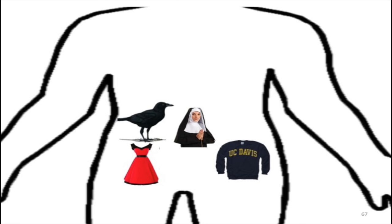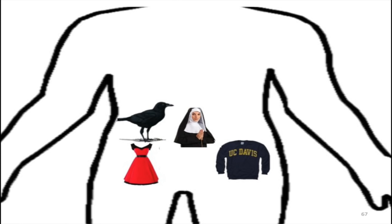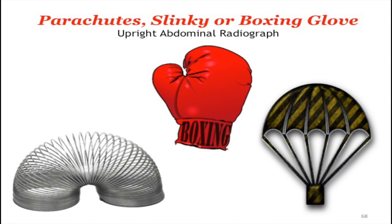For appendicitis, the mnemonic is PROM: Psoas sign, Obturator sign, Rovsing sign, and McBurney's point. A Sister Mary Joseph nodule at the umbilicus is linked to adenocarcinoma. Three X-ray patterns of the abdomen: boxing gloves represent volvulus, parachutes represent ileus, and slinkies represent bowel obstruction.